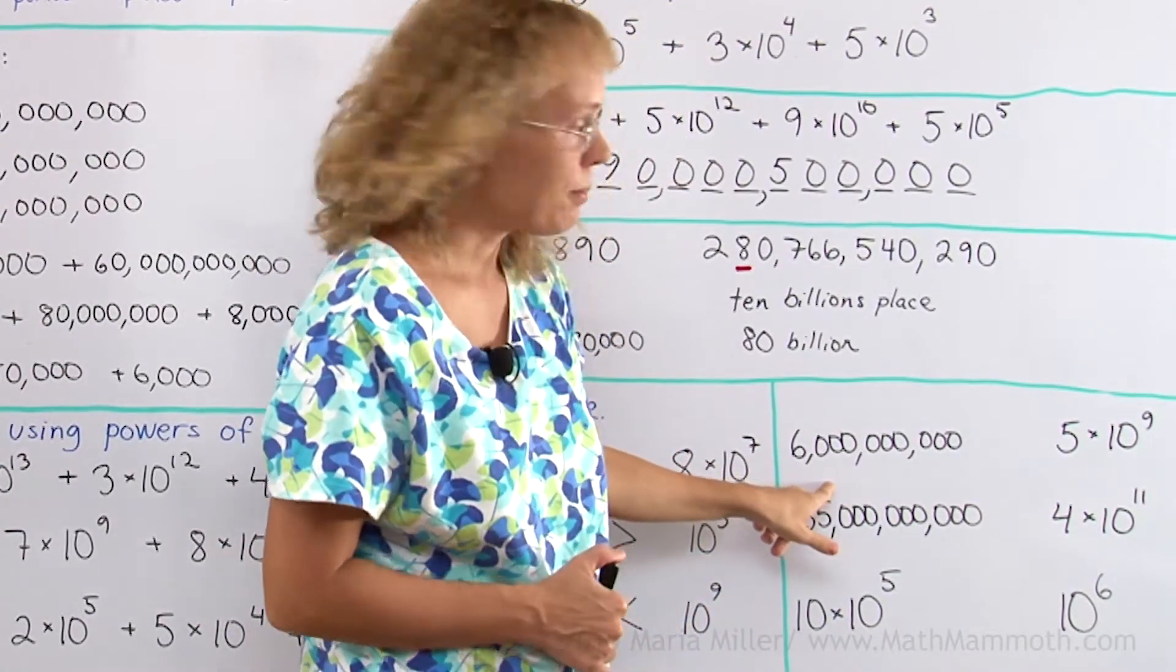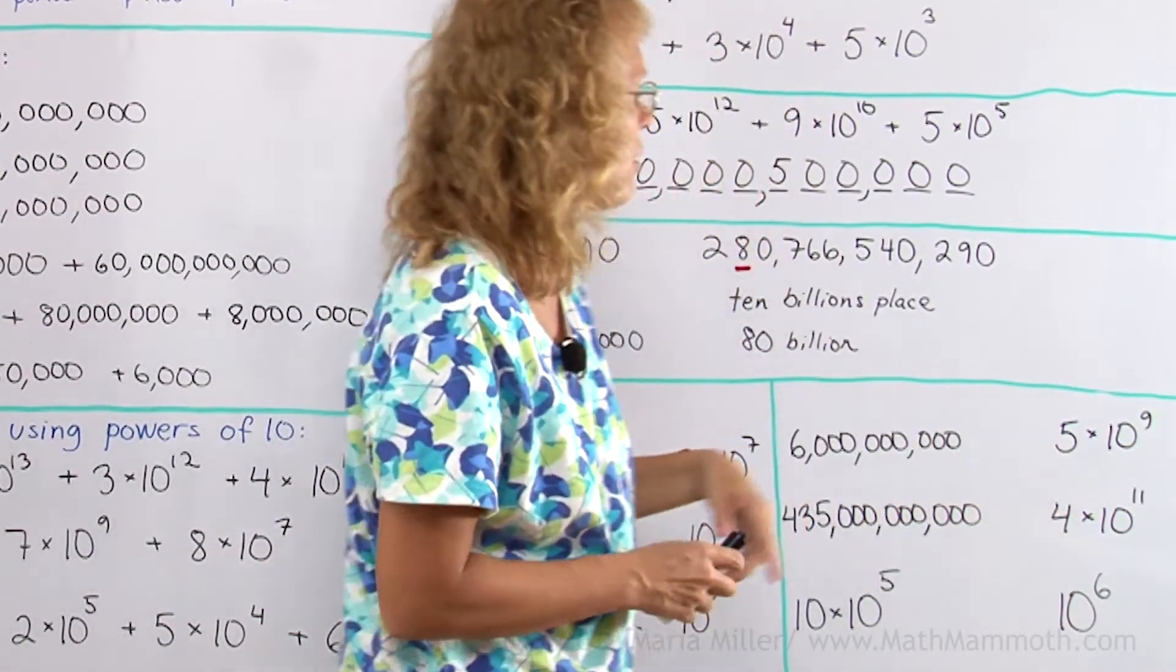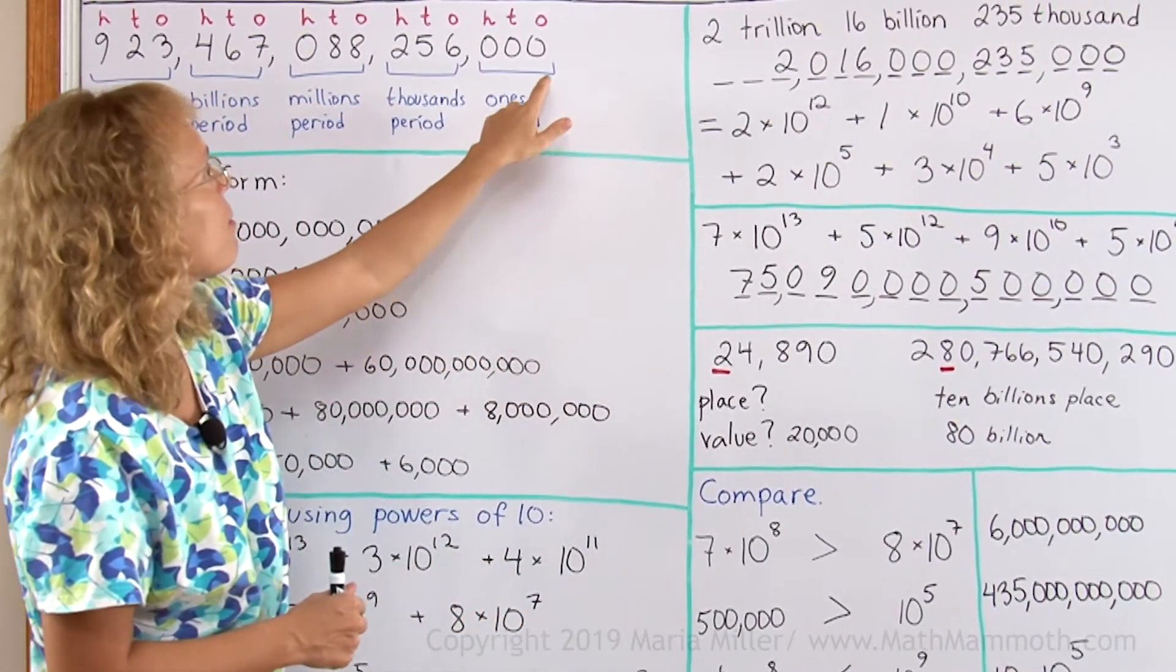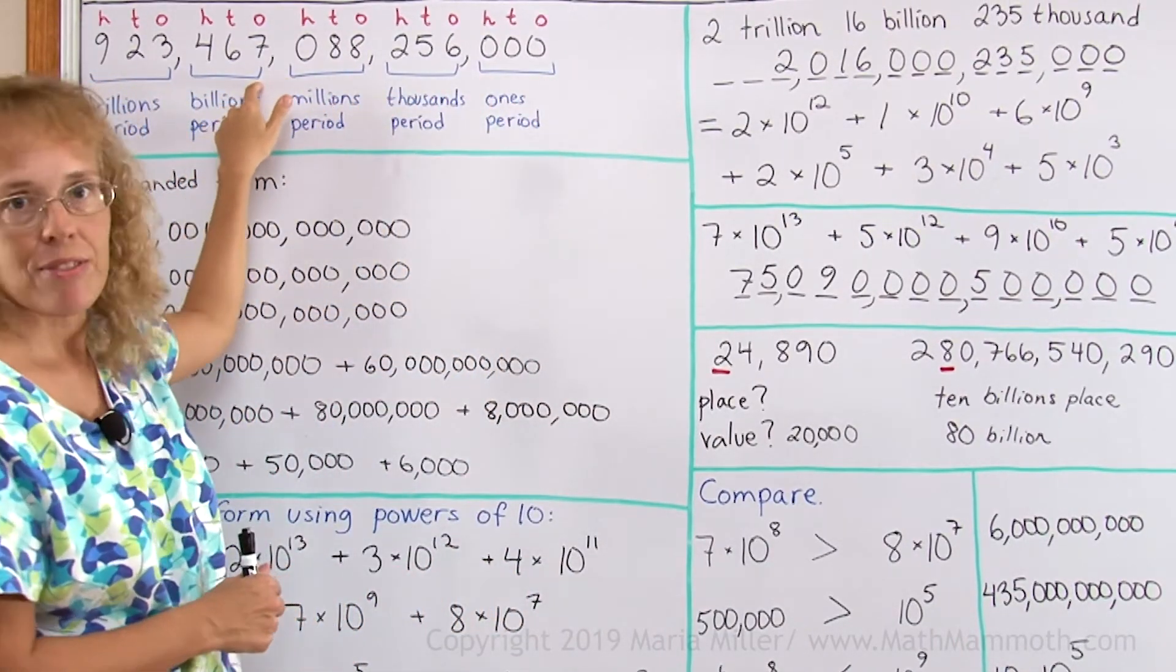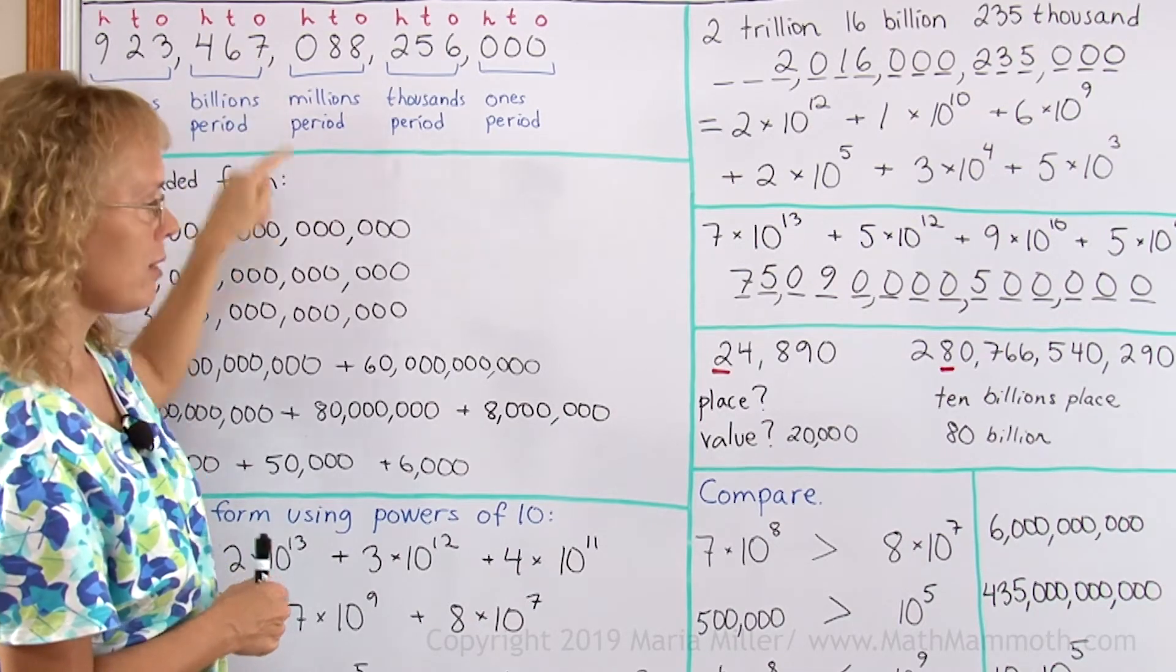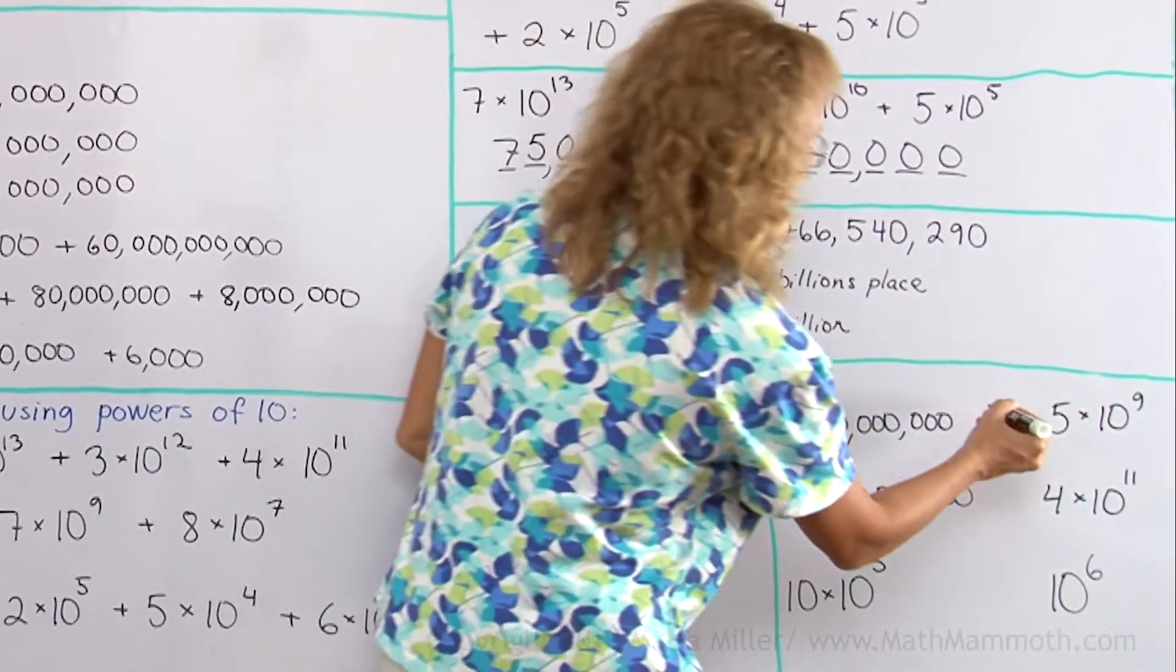Here, 6 billion. Here, 5 times 10 to the 9th. 10 to the 9th—let's count our digits. 9 zeros, and then over here would be 5, so it's 5 billion. And 6 billion? Of course, 6 billion is more.